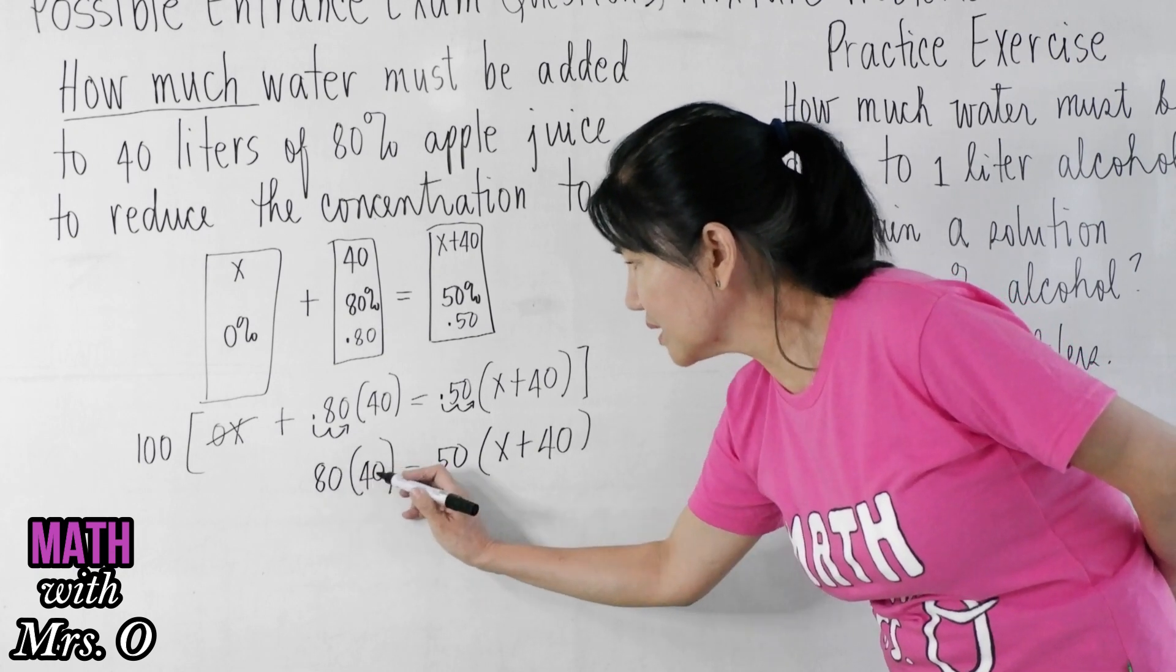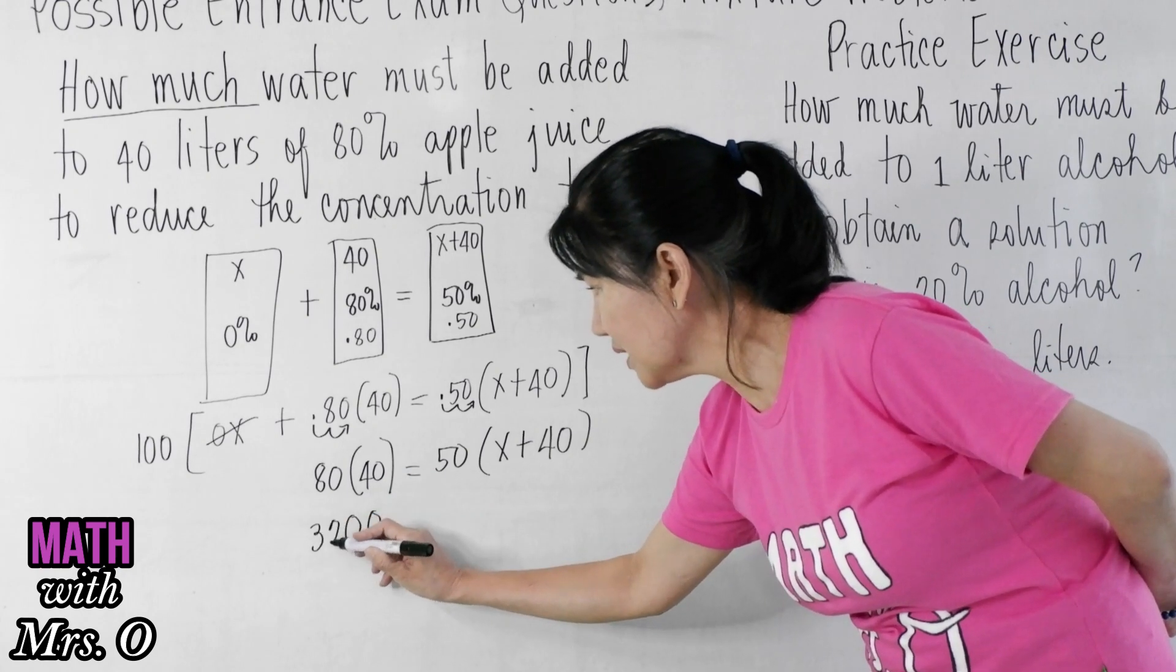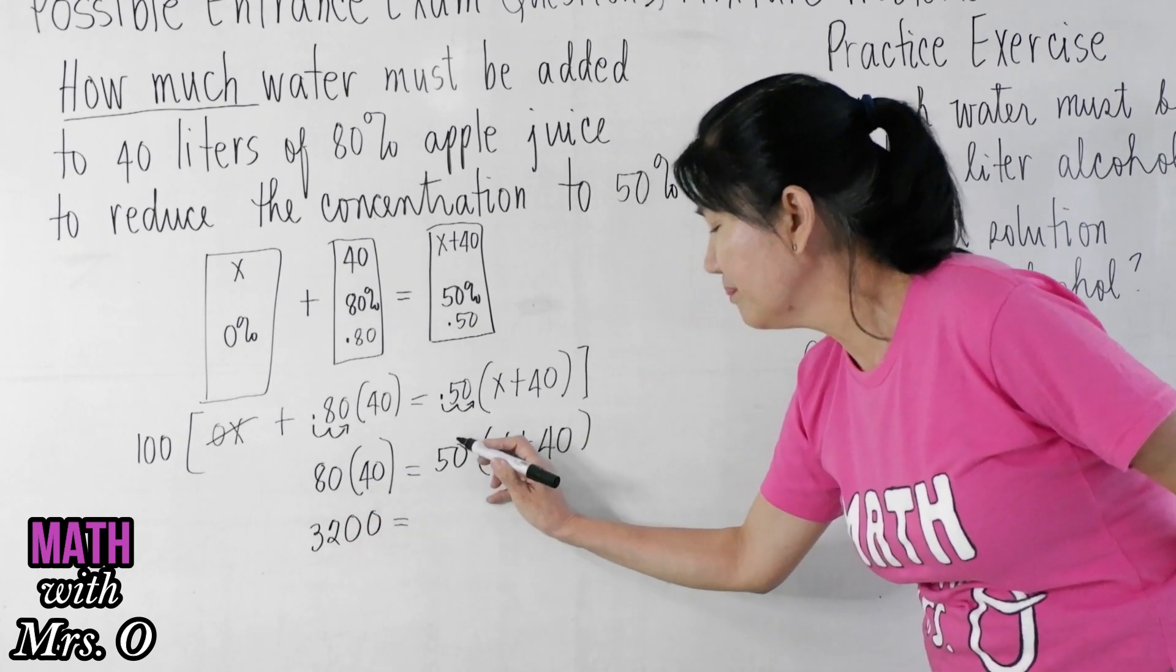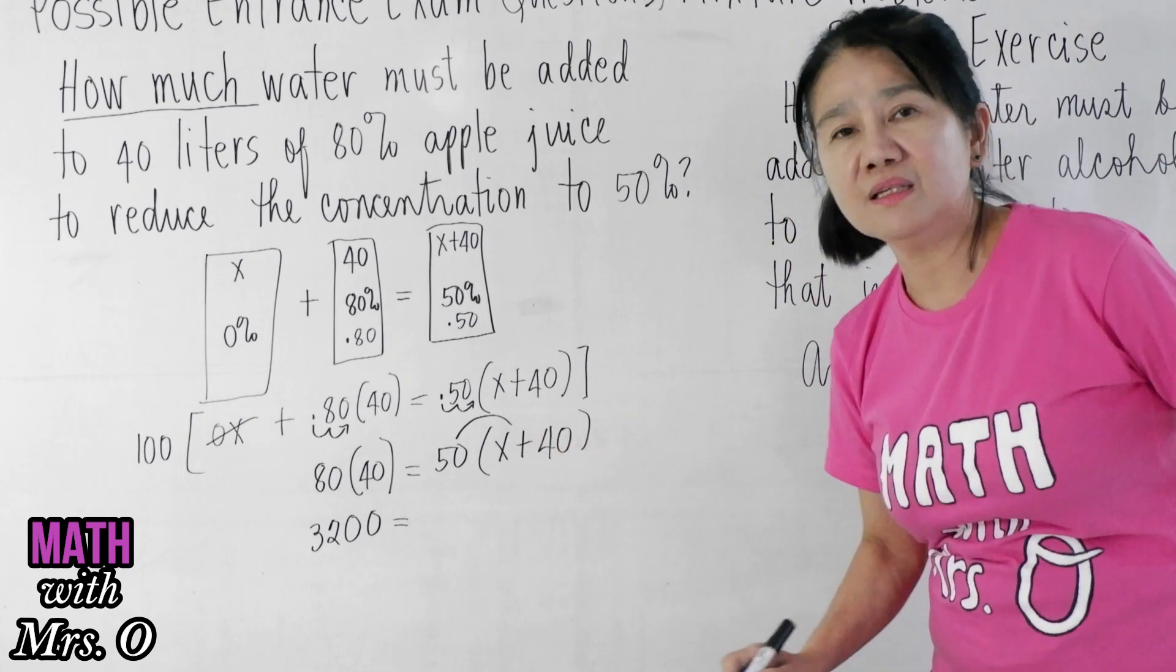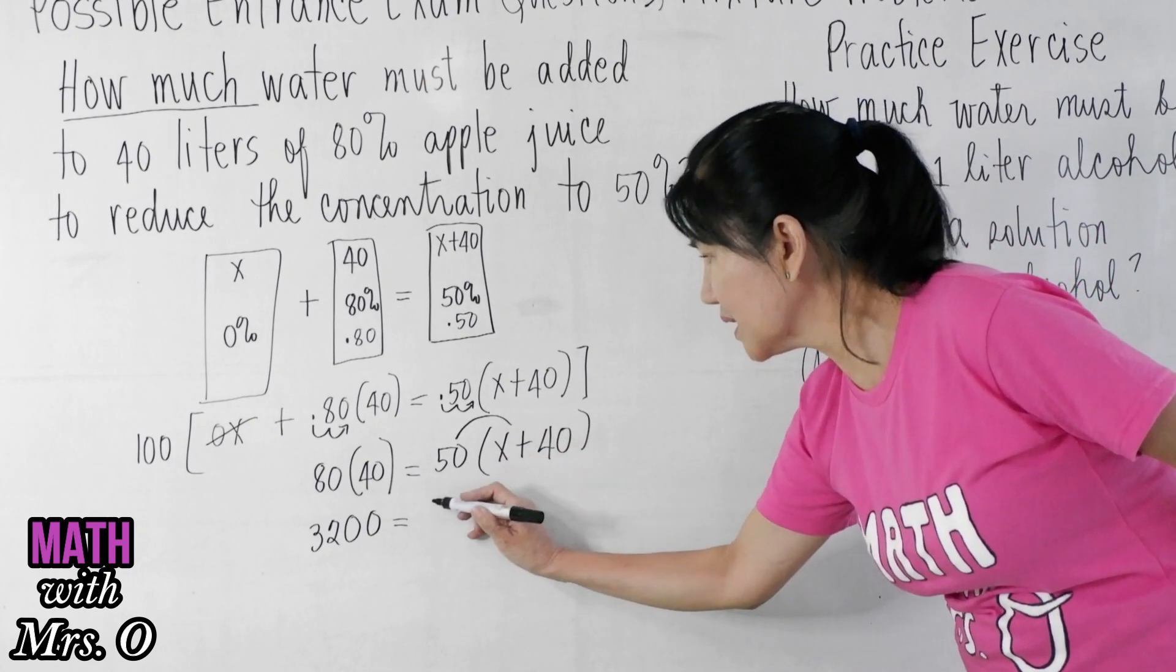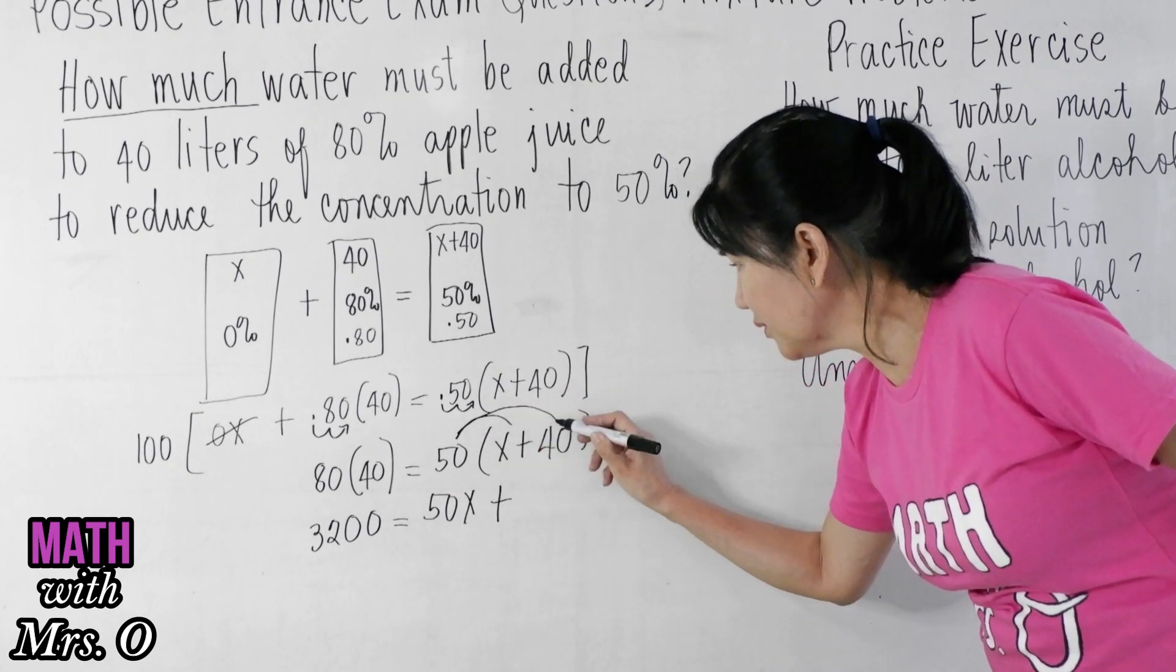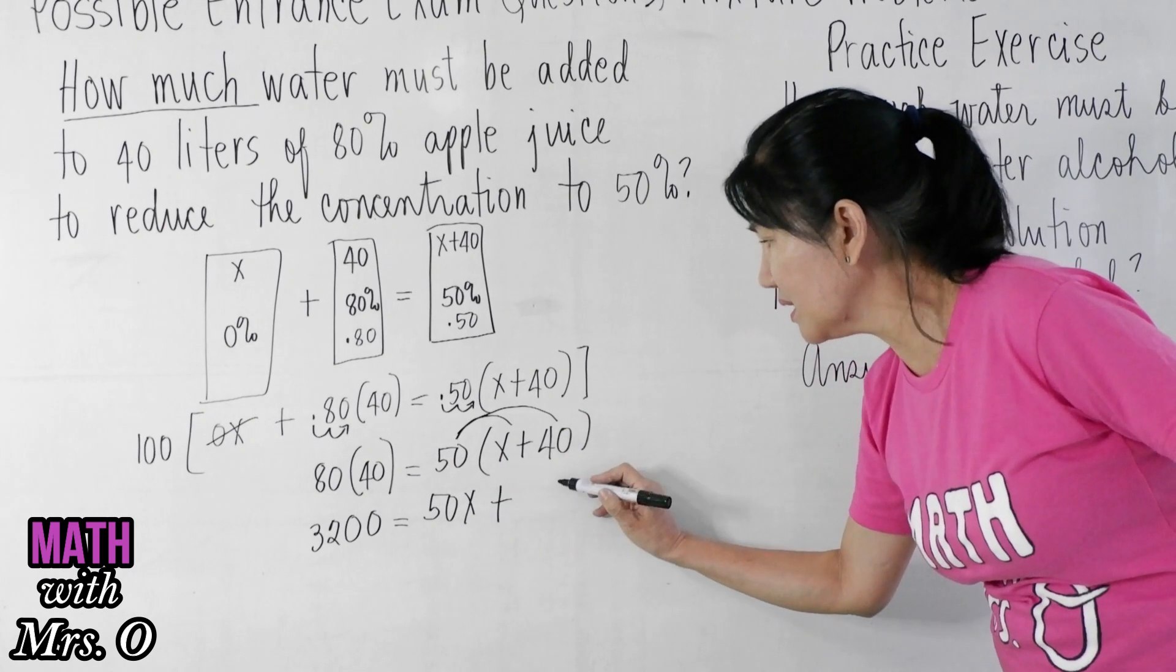80 times 40, we have 2 zeros, so 1, 2, 8 times 4 is 32, so that will be 3200. Distribute 50 to the terms here, so 50 times x is 50x, plus distribute 50 again, 50 times 40 is...